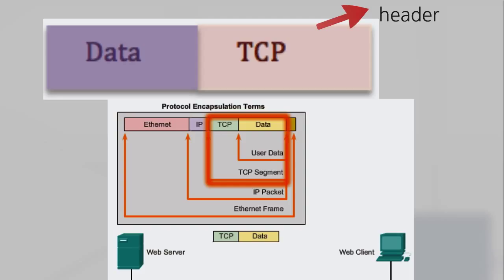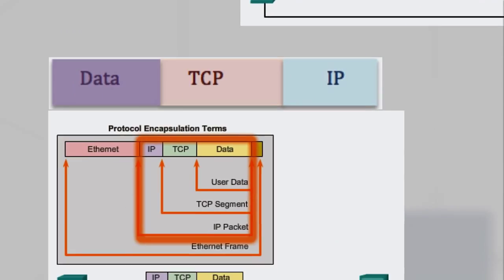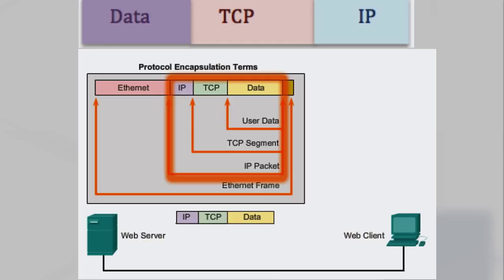The transport layer encapsulates the web page HTML data within the segment and sends it to the Internet layer where the IP protocol is implemented. The entire TCP segment is encapsulated within an IP packet, which adds another label called the IP header. The IP header contains source and destination host IP addresses, as well as information necessary to deliver the packet to its corresponding destination process.